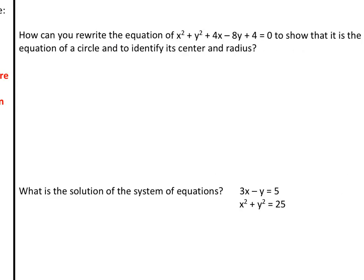Let's see if we can put that to the test with our equation on the right-hand side. How can you rewrite the equation of x² + y² + 4x - 8y + 4 = 0 to show that it is the equation of a circle, and to identify its center and radius? By definition, we know this is going to be a circle, because the coefficient in front of x² and y² is the same. So, a equals b. That's how we know it's a circle, but we want to put it in standard form for the equation of a circle.